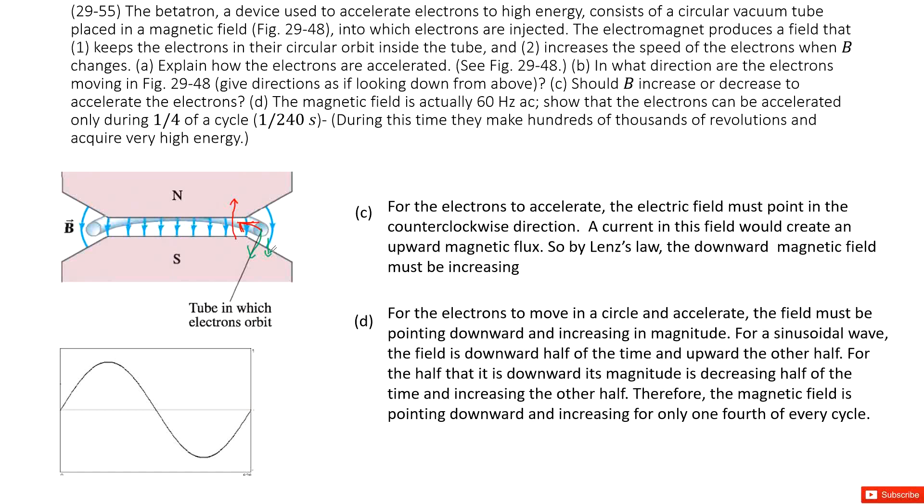When we want to accelerate the electrons, B increases. The second part tells us the magnetic field oscillates with frequency 60 Hz. This shows that electrons can be accelerated only during half of the cycle. That is easy.